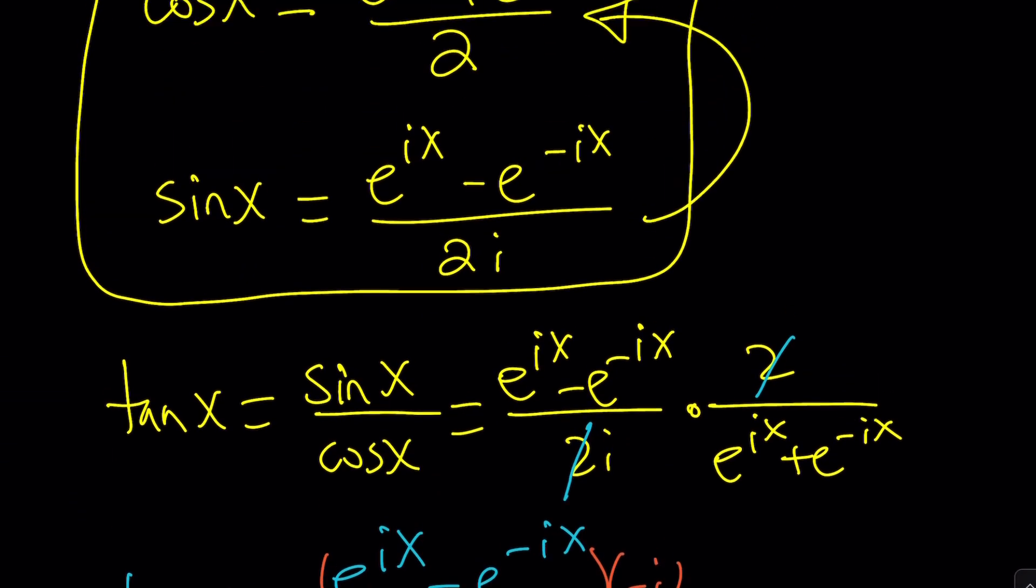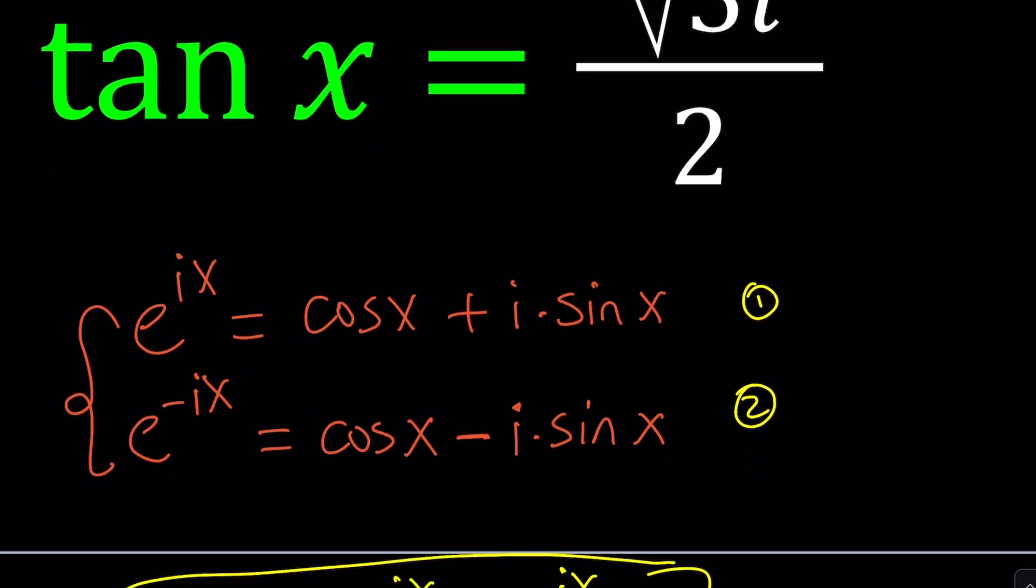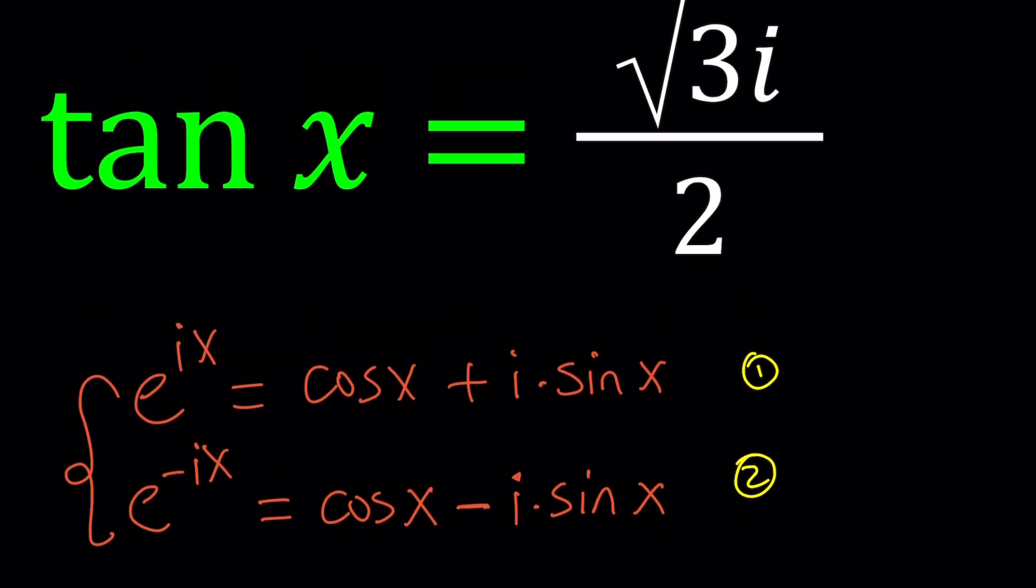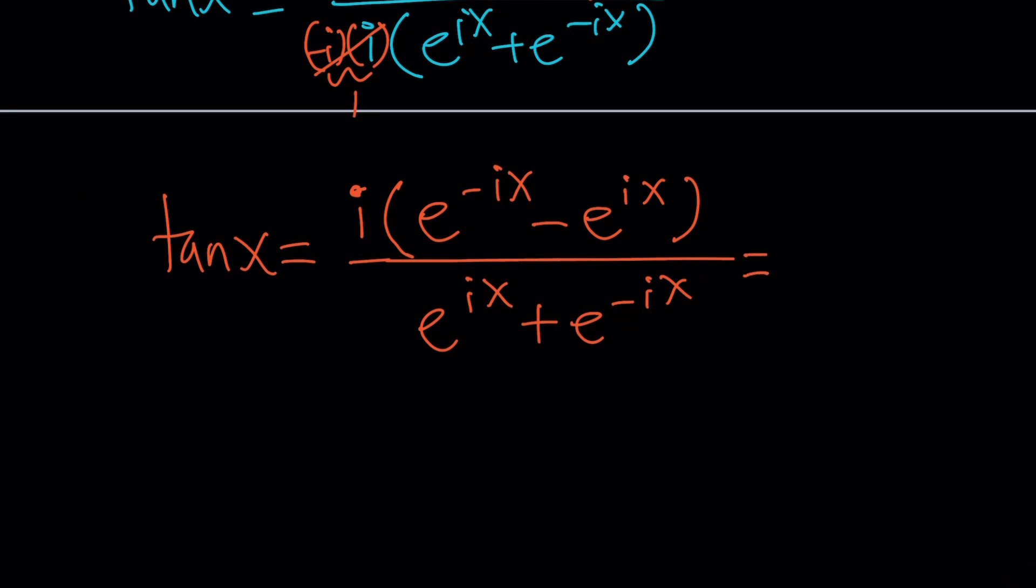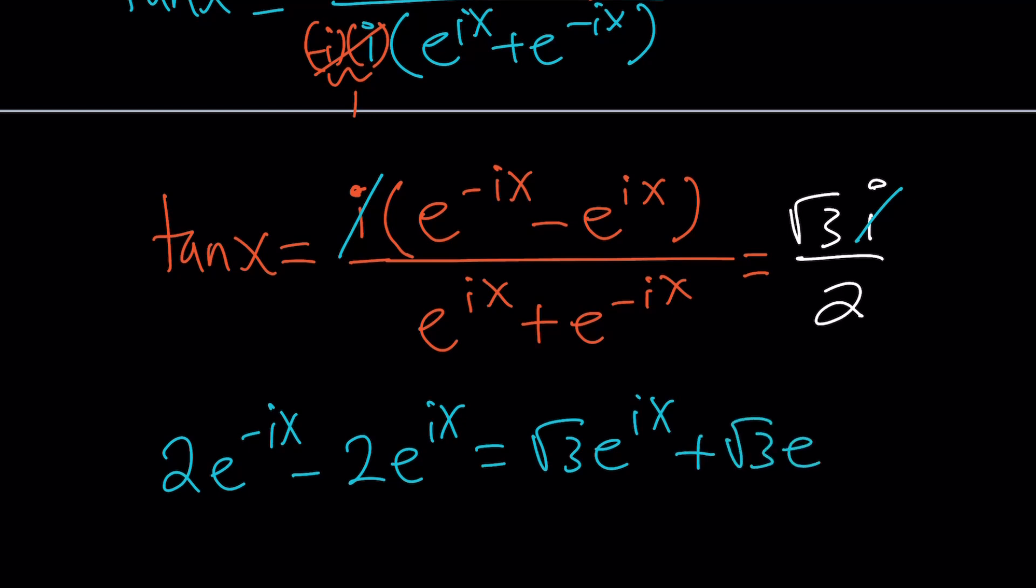Let's multiply both the top and the bottom by negative i. Negative i times i is negative i squared, and that is going to be 1. Distributing the negative i basically means you're going to negate what's inside. So we get i times e to the negative ix minus e to the ix divided by e to the ix plus e to the negative ix, and we can set it equal to our value, which is root 3 i over 2.